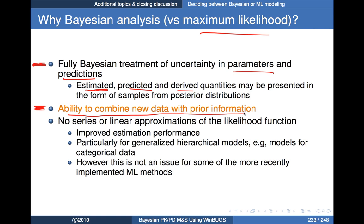One thing to note: if you're using maximum likelihood methods for population modeling — hierarchical models using approximations to the likelihood function, such as NONMEM up through version 6 — there are often series or linear approximations to the likelihood function, whereas using full MCMC simulation avoids such approximations. For a number of contexts this yields improved estimation performance, particularly for generalized hierarchical models such as models for categorical data.